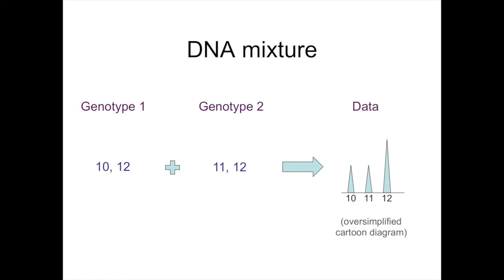A DNA mixture arises when two or more people contribute their DNA to the same sample. A genotype is the pair of alleles that an individual has at a genetic location — one inherited from the mother and one from the father. Here we see how a first genotype with STR allele lengths 10 and 12 is combined with a second genotype having alleles 11 and 12, producing data with peaks at alleles 10, 11, and 12 — more than two alleles — suggesting at least two people are present.